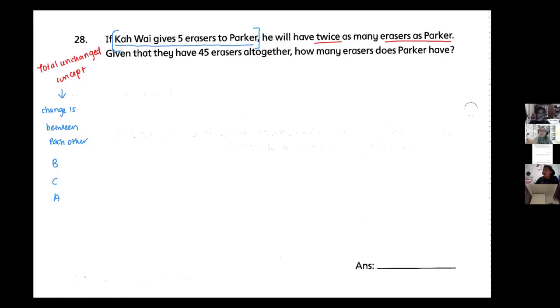So you know that the giving action, the action of giving, is my change. What happened? Kawai gives five erasers. Give means minus five. To Paka, Paka gets it, so Paka plus. Kawai minus, Paka plus. Plus what? Five. Minus what? Five.